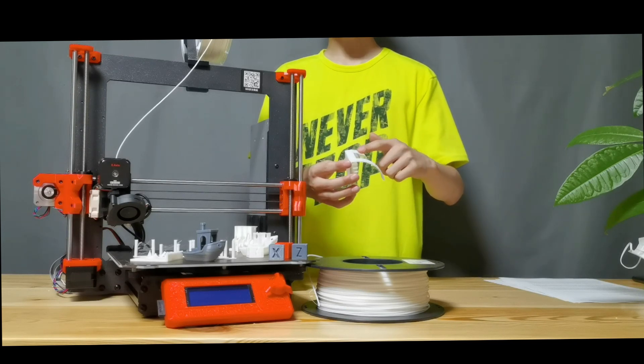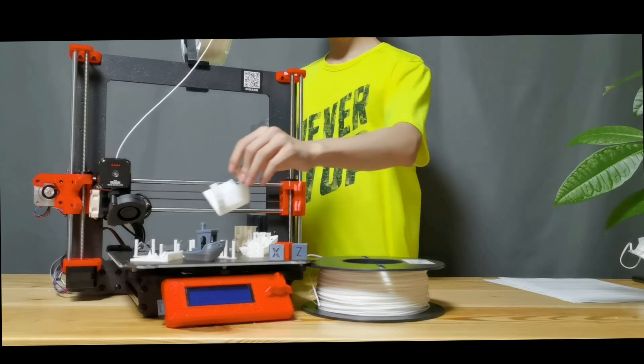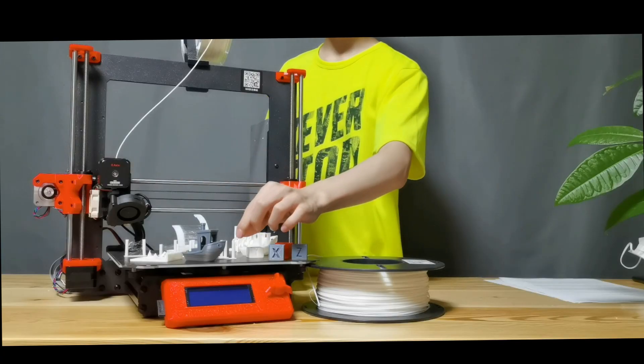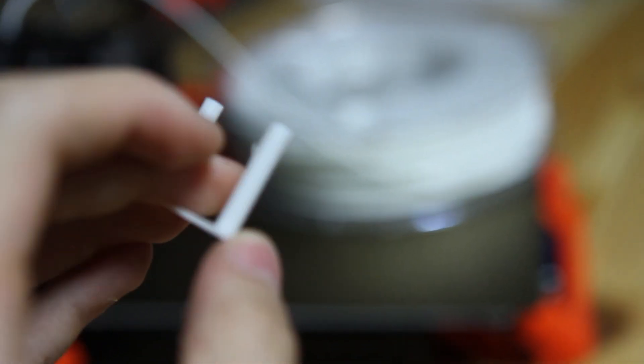There's blobs and zits all over it. And strings, fine strings. This is just the start of it. This is a stringing test I printed with Prusa Slicer. Alright, that's the default settings.